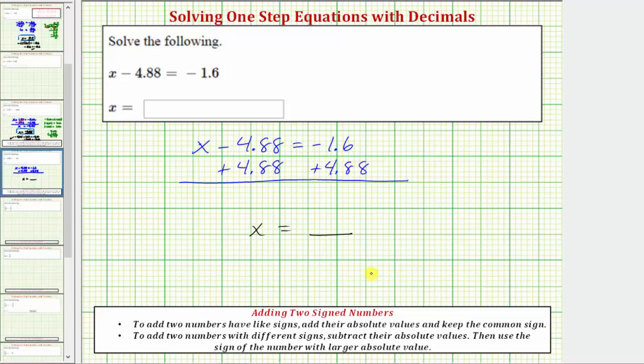Going back up to our equation, looking at the left side, adding 4.88 undoes the minus 4.88, or we can think of this as negative 4.88 plus 4.88, which is simplified as zero. Now on the left side we just have x equals.